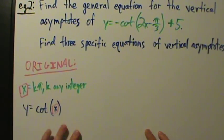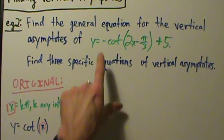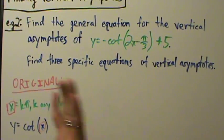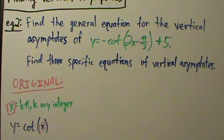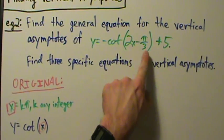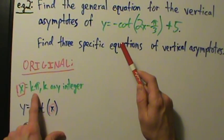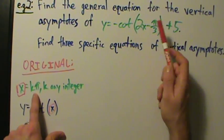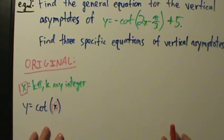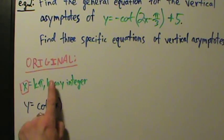We don't have cotangent of x — we have negative cotangent of a big mess plus 5. The negative changes absolutely nothing. The plus 5 makes absolutely no difference as well. The only thing that matters is that we have a cotangent, and we have to pay attention to what's inside. Cotangent tells us to use k pi, and then we take the entire expression inside and set it equal to k pi.